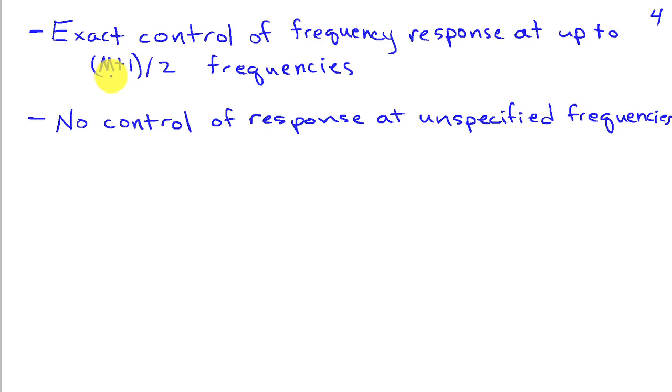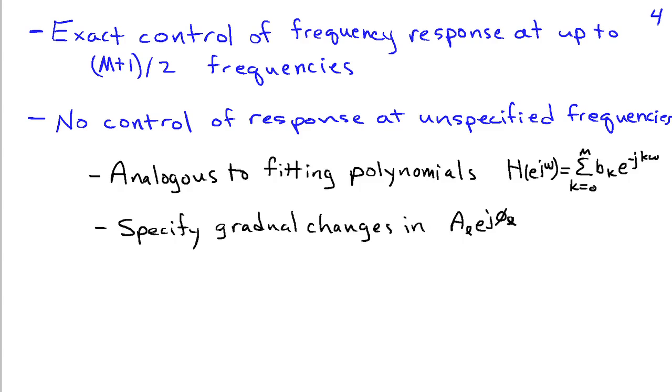We have exact control of the frequency response of our filter at up to (M+1)/2 frequencies. The higher the order of the filter, the bigger M is, the more frequencies at which we can control the response exactly. However, in between the frequencies that we specify, we have no control of the response, and this can sometimes cause problems. We spoke a minute ago about the frequency response being a polynomial in e^(-jω), and so what we're trying to do is fit our frequency response to a set of points. It's like fitting those points with a polynomial.